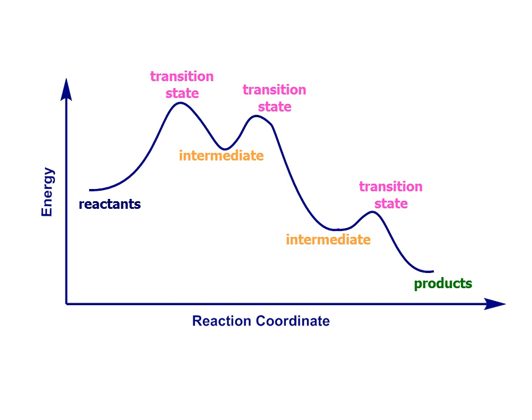Simple energy profile diagrams show us the starting materials on the left and products to the right, with progression of the reaction from left to right, and the energy change as we proceed over time shown in the curve. The y-axis depicts an energy scale, the x-axis a time scale, usually called reaction coordinate or reaction progress.